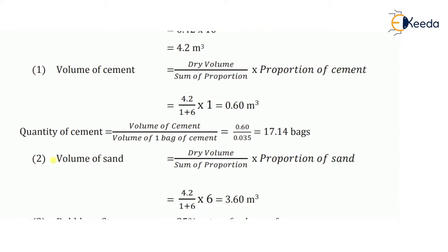Now let's calculate the volume of sand. The formula is again the same: dry volume divided by sum of proportion into proportion of sand. Dry volume is 4.2, divided by sum of proportion 1 plus 6, into proportion of sand which is 6. This comes as 3.60 meter cube.